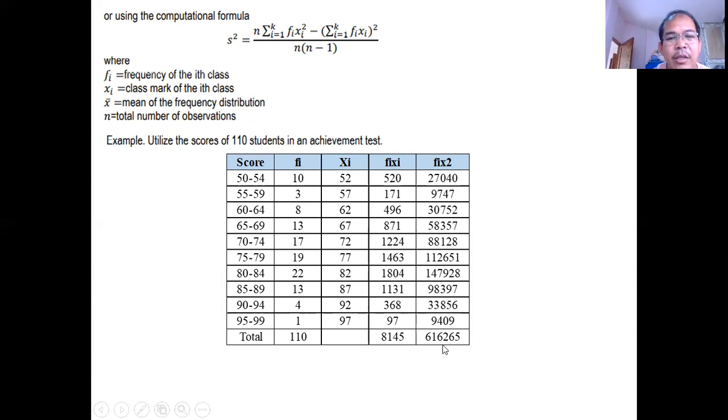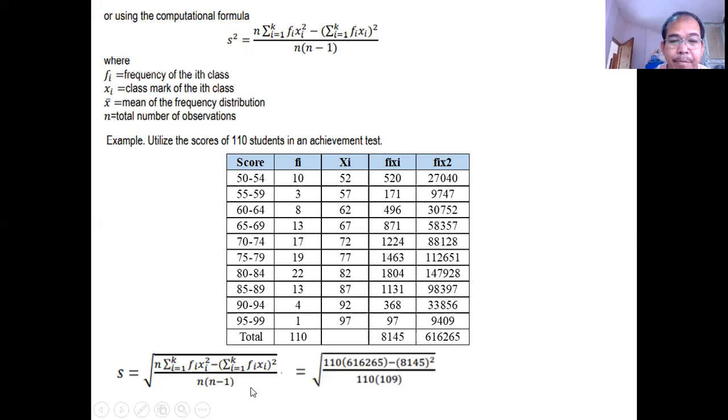Ito yung result. 616265. And we will just substitute that in our formula. We have n is 110. Ang answer nito. This one. Check this one. Answer nito is 616265. Ang answer nito is 8145. Pero meron pa siyang exponent na 2. This one is 110 times 109. That's it. Substitute na lang.